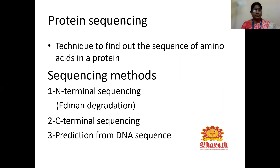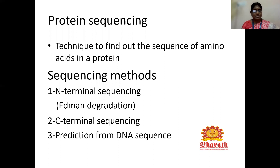There are different types of protein sequencing methods. Protein sequencing is the important technique to find out the sequence of various amino acids in a protein molecule. Sequencing methods include N-terminal sequencing, which is called Edman degradation method — the most common method — and the second one is C-terminal sequencing, and the third is prediction from DNA sequence. Edman degradation is the most commonly used method and many researchers continue to work on it.